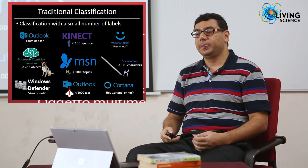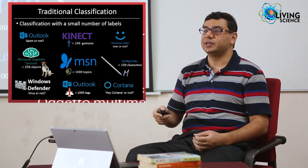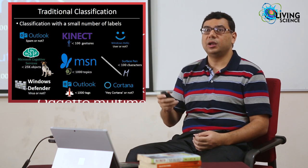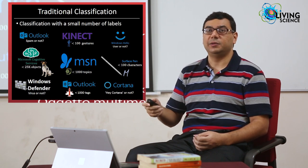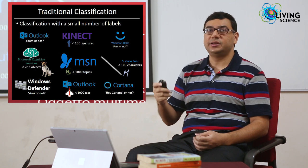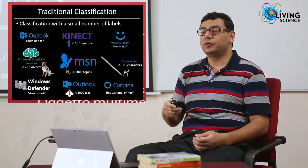If you looked at the state of the art in 2012, people were working on these different classification problems but with only a small number of labels. Here I've shown some Microsoft products that depend on binary, multi-class, and multi-label classification, and as you can see the number of labels in each is fairly limited. People had gradually gone from tens of labels to hundreds and thousands, and the largest publicly available dataset had about 5,000 labels — an output space of 2 to the power of 5,000.